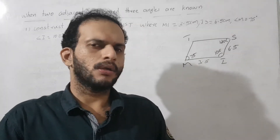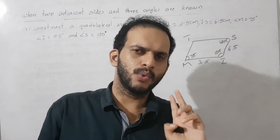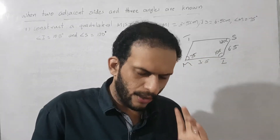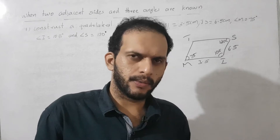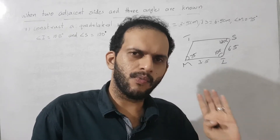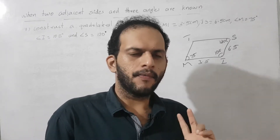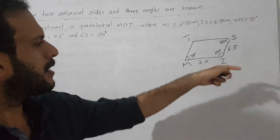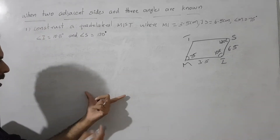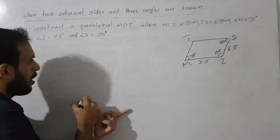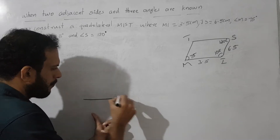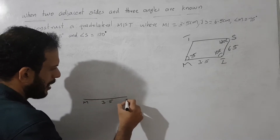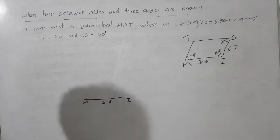Here we clearly know the 2 side measurements. The first step is to draw any one of those sides. We are starting from MI. We use the scale, take the exact 3.5 cm length, and we mark it — the name is MI. So we draw a 3.5 cm line.